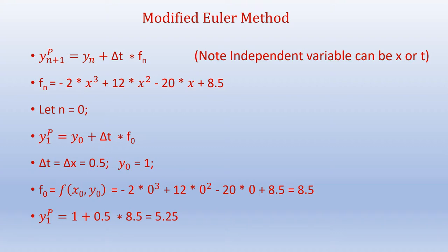We write down the predictor equation: y_{n+1}^p = y_n + Δt·f_n, where f_n = f(x_n, y_n). For n = 0, we have y_1^p = y₀ + Δt·f₀. Here Δt = Δx = 0.5 and y₀ = 1. Then f₀ = f(x₀, y₀) = 8.5, since x₀ = 0. So y_1^p = 1 + 0.5 × 8.5 = 5.25.